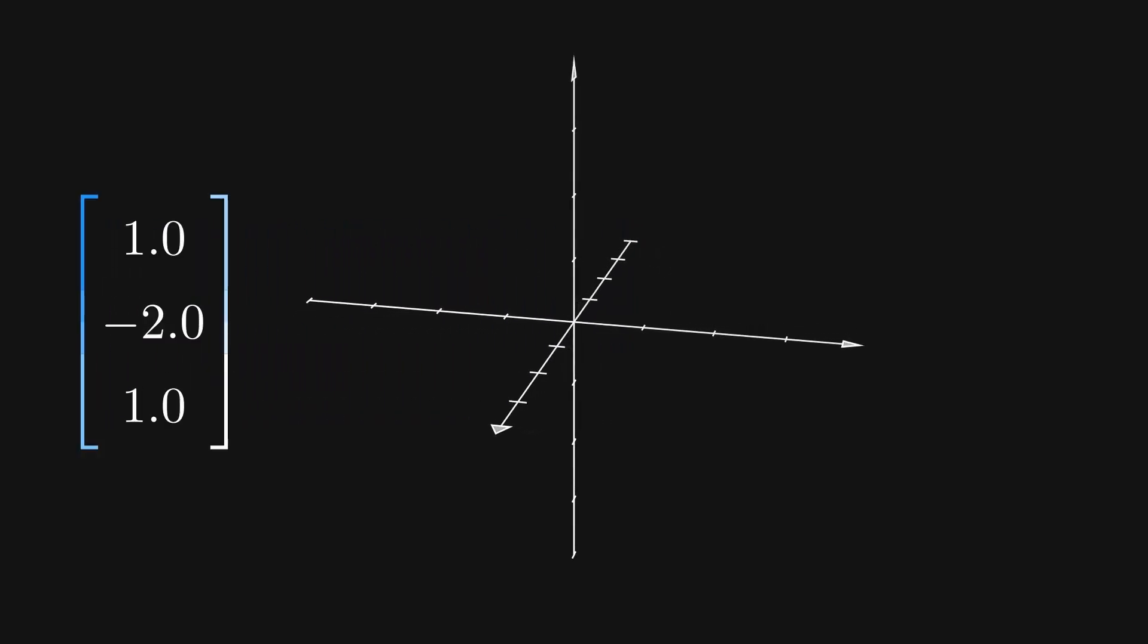For example, take a single column of this matrix, or any list of three numbers. Sometimes it's useful to interpret three numbers as a point in 3D space, corresponding to the number of steps you take in the orthogonal x, y, and z directions.